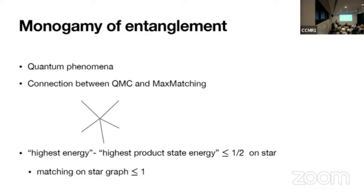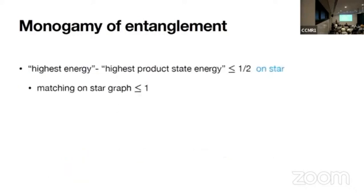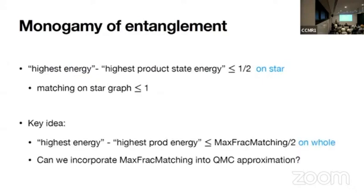Where is the energy? The energy is the objective function on single edge. Right, correct. And also notice that matching on star graph is less than one. All right, so this is what I just said. And the key idea to connect maximum matching and our problem is that if you add these inequalities over the whole graph, then highest energy minus highest product energy is at most maximum fractional matching divided by two on the whole graph.